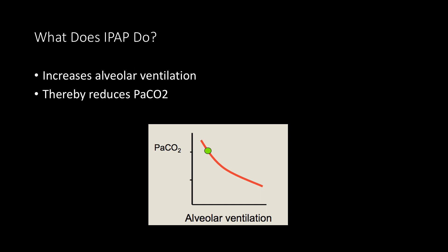What does EPAP do? The expiratory positive airway pressure helps with alveolar recruitment, helps to improve oxygenation, and decreases the work of breathing. It also offsets intrinsic or auto-PEEP and helps to decrease both afterload and preload. IPAP increases alveolar ventilation — recall that alveolar ventilation equals respiratory rate multiplied by tidal volume — and therefore reduces CO2.